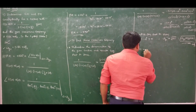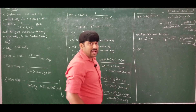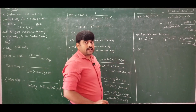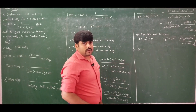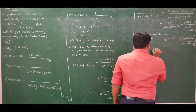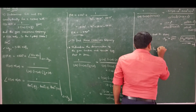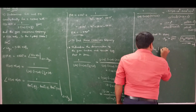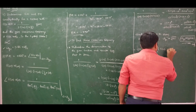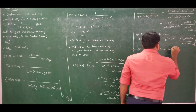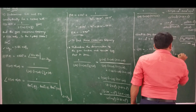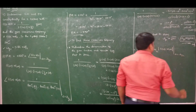Now use the phase crossover frequency to find gain margin. From the definition, gain margin = −20 log₁₀ |G(jω)H(jω)| evaluated at ω = ωpc. We need to find the magnitude of the given function at ω = 0.7071.